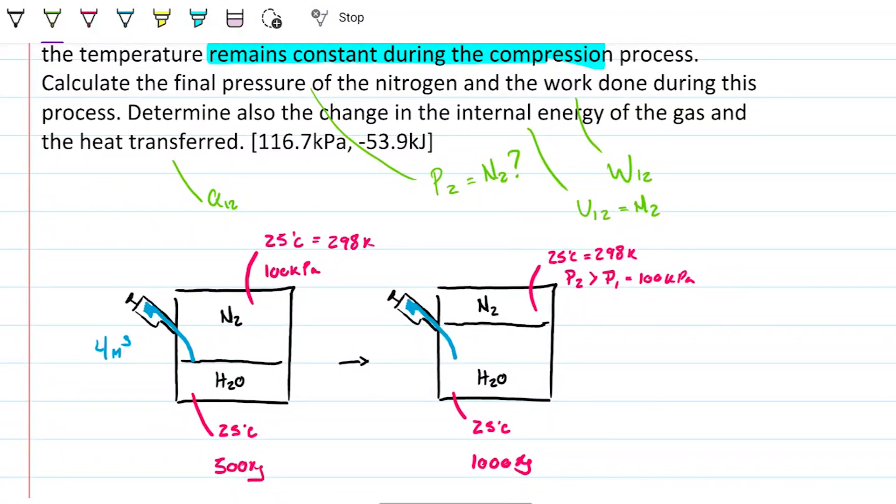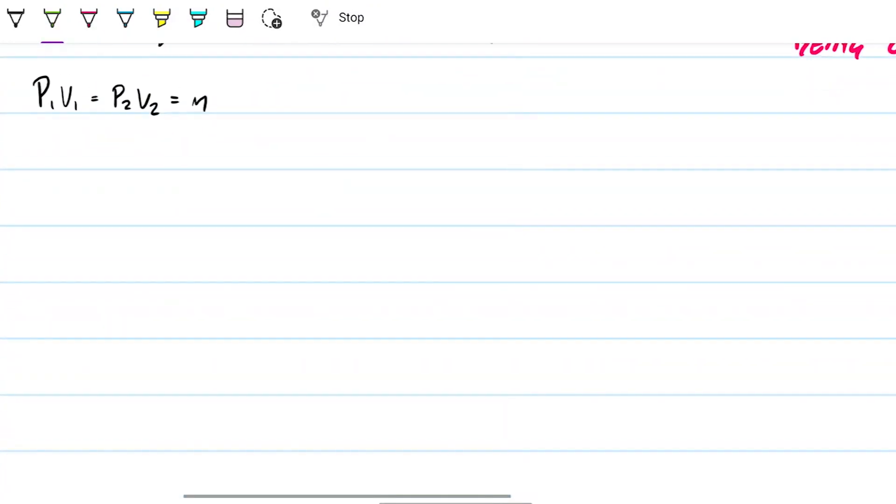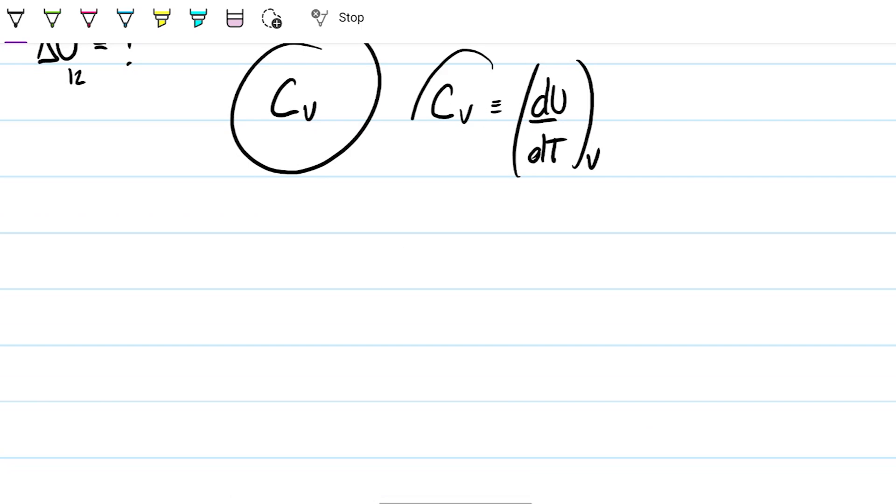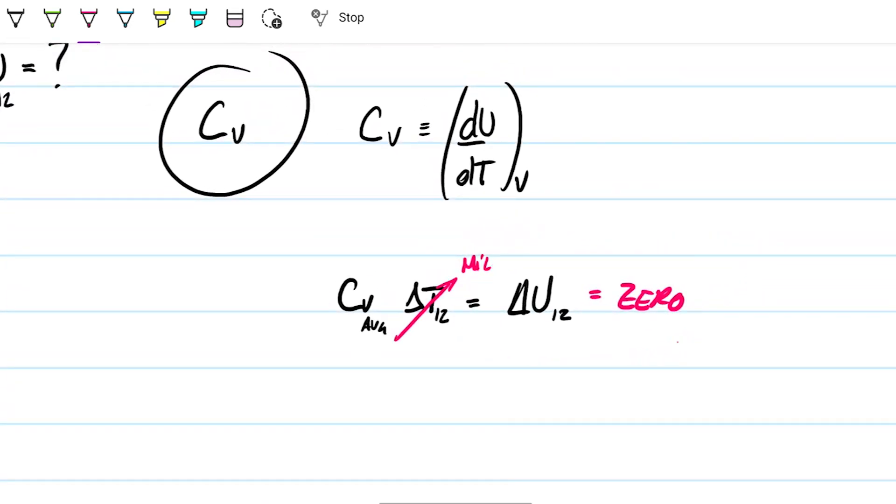So next part up is what is the change in internal energy and what is the heat transferred? Change in internal energy. In the beginning of the problem, they give us C sub V. C sub V is defined as the rate at which internal energy varies with temperature in a constant volume process. We can integrate this so that we end up with C sub V average value times delta T equals delta U. What is the delta T? Well, T1 and T2 are the same, so therefore delta T is zero. And if delta T is zero, then delta U is also zero. There's no change in internal energy whatsoever in this process.